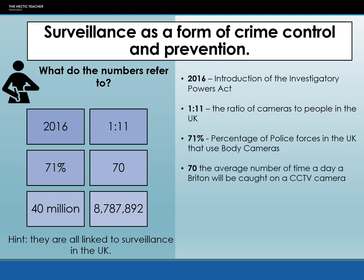70% is the average number of times a day a Briton will be caught on a CCTV camera. This is in ordinary times, not COVID times when hardly anyone's leaving the house — we are talking about normal times when you're going about your day-to-day business, going into town, shopping, going to the supermarket. On average, it's about 70 times a day, which is a lot.